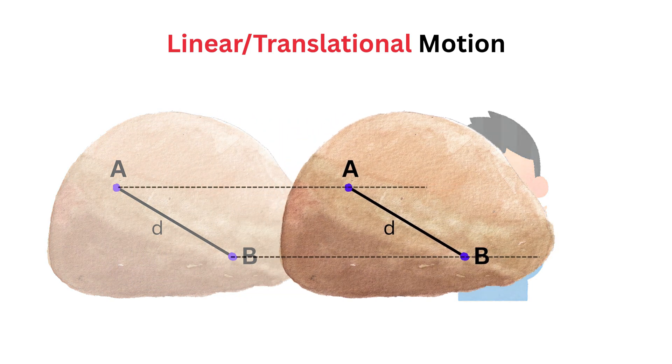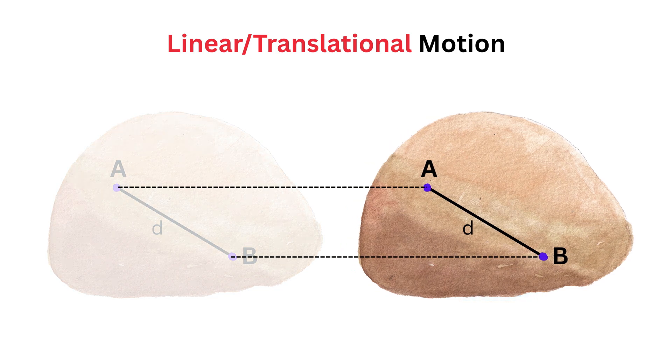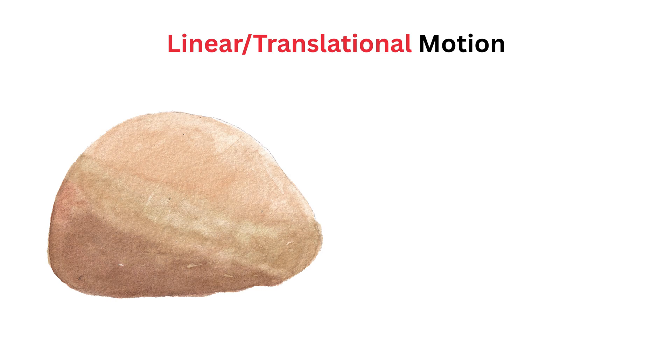So if the entire body moves five meters to the right, both point A and point B also move five meters to the right. Before motion, if you draw a straight line from A to B, let's call it line AB, it points in a certain direction. After the motion, this line AB will still point in the same direction, and it will still be parallel to its original position.